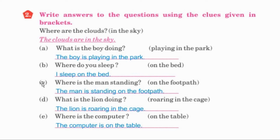C. Where is the man standing? Clue is on the footpath. All of you write: the man is standing on the footpath.